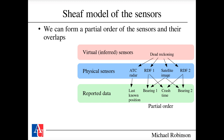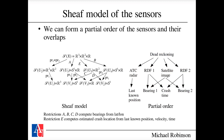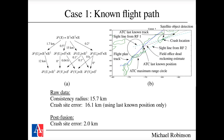A partial order and sheaf are built over the sensor system. The four physical sensors form nodes: ATC radar, two RDF sensors, and satellite image. Reported data includes the last known position, bearings with timestamps from RDF sensors, and bearing estimates from the satellite. The restriction maps a, b, c, d compute bearings from latitude and longitude; restriction e estimates the crash location from last known position, velocity, and time. The sheaf structure encodes dead reckoning at the top node.